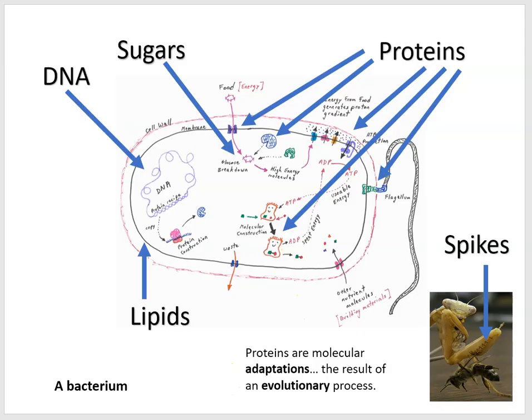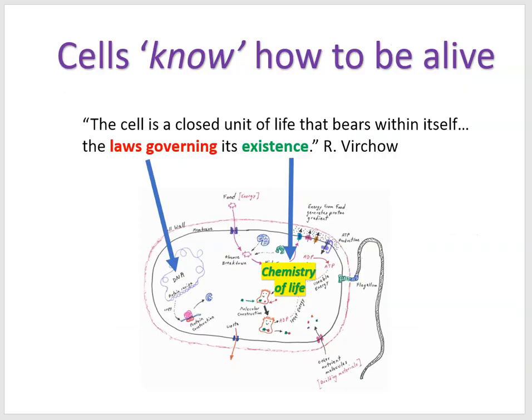For now, we want to think about cells as knowing how to be alive. One scientist said the cell is a closed unit of life that bears within itself the laws governing its existence. The existence of a living thing requires that the chemistry of life is happening inside this membrane boundary, and the laws governing this chemistry are the result of the presence of DNA.